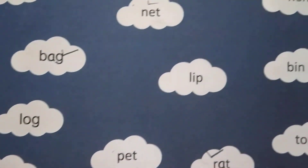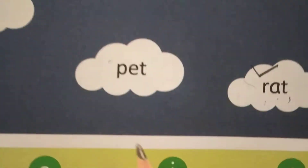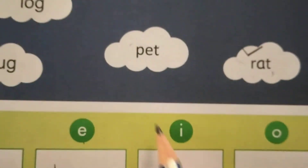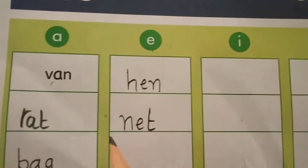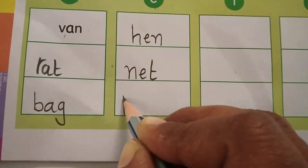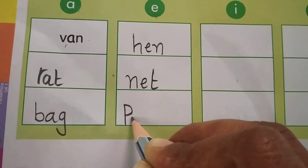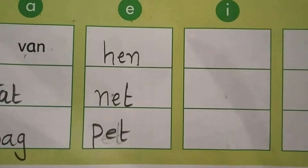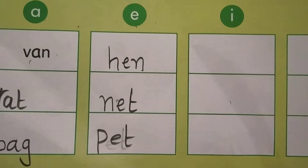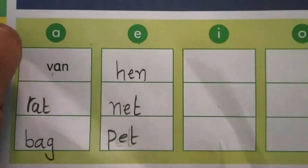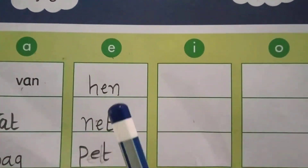Find one more word here. See: P, E, T — pet. Write P, E, T — pet here. Completed. P, E, T — pet. E letter words are completed.